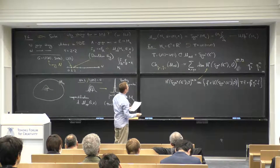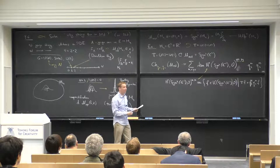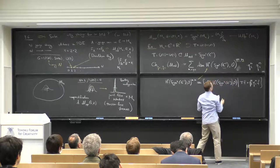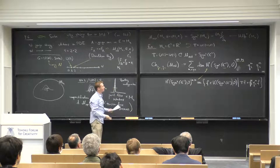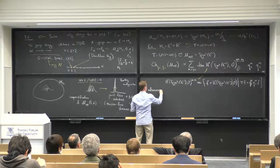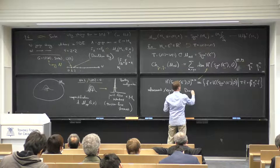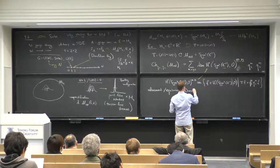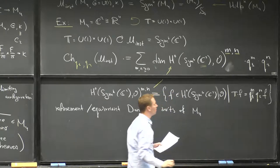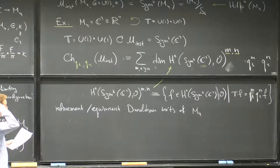We're basically describing the invariant coordinate ring on the symmetric product. Elements of H⁰ of Sym^K(ℂ²) with weights (m, n) consist of functions such that the torus action on f gives eigenfunctions with respect to the torus action. This gives us a bunch of interesting invariants. These should be viewed as invariants of the 4-manifold M₄. Our 4-manifold in this case is ℂ², and this is a refinement or equivariant version of Donaldson theory.